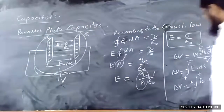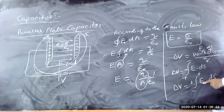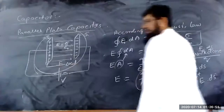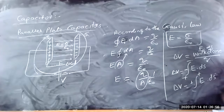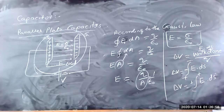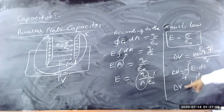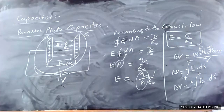Here E is given. Substitute the value of E and substitute the value of dS, where dS is the length giving the separation between the plates. As a result, you can easily find the potential difference between the parallel plates of the capacitor.